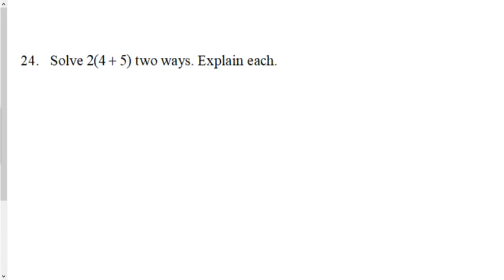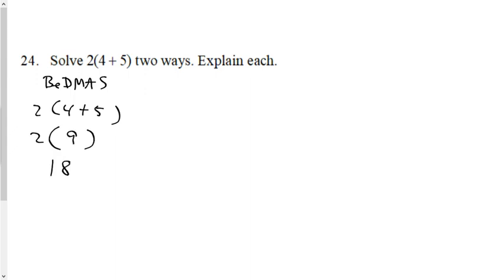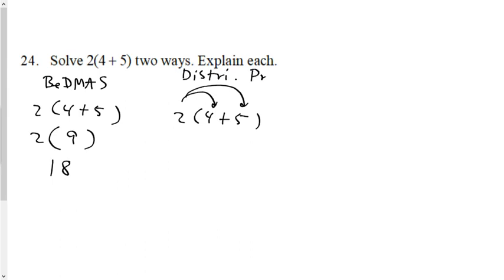Question 24 asks you to solve two ways and explain each. The first way is with BEDMAS (order of operations): 2 plus 9 equals 18 — wait, 2 times 9 equals 18. The second way is with distributive property: 2 times 4 plus 2 times 5, which is 8 plus 10, also equals 18. Both methods give the same answer.